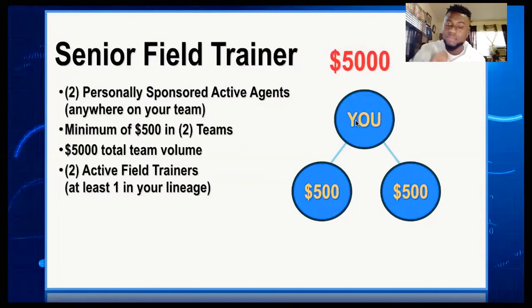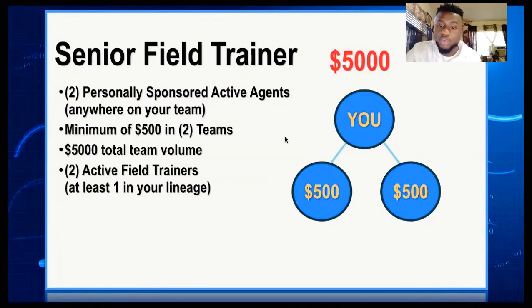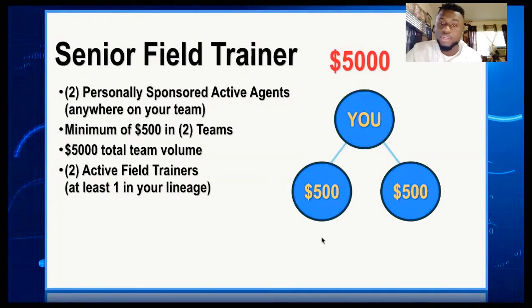Very simple. For example, if those 2 people who became Field Trainers each have 1600, that's 3200. If you signed a 3rd person who also becomes a Field Trainer, that brings more volume. Add it all together — if it reaches 5000 in volume, you become a Senior Field Trainer. You don't actually need a 3rd person — the minimum is 2 — but this is just an example.